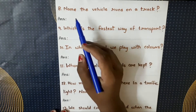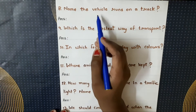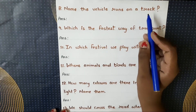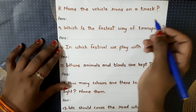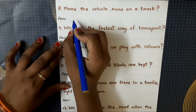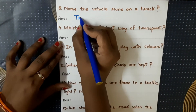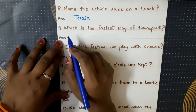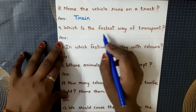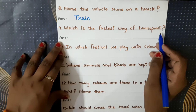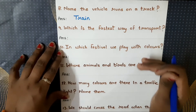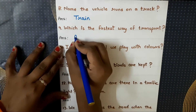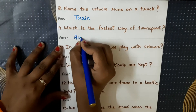Next question: name the vehicle that runs on a track. Track pe kaunsi vehicle chalti hai? It's a train. Which is the fastest way of transport? Jo sabse fast hai? That is airways.